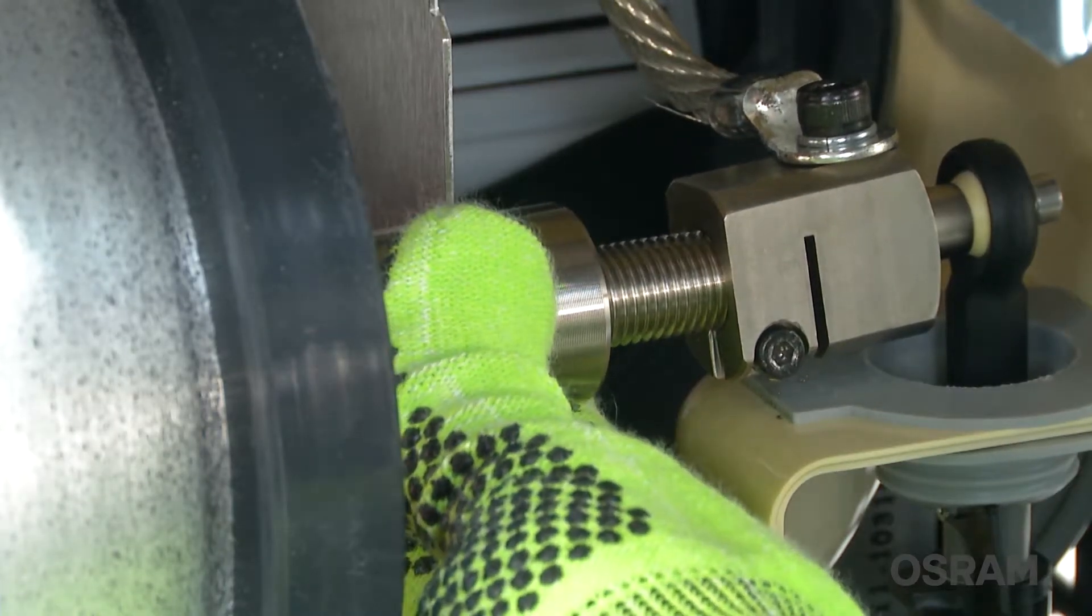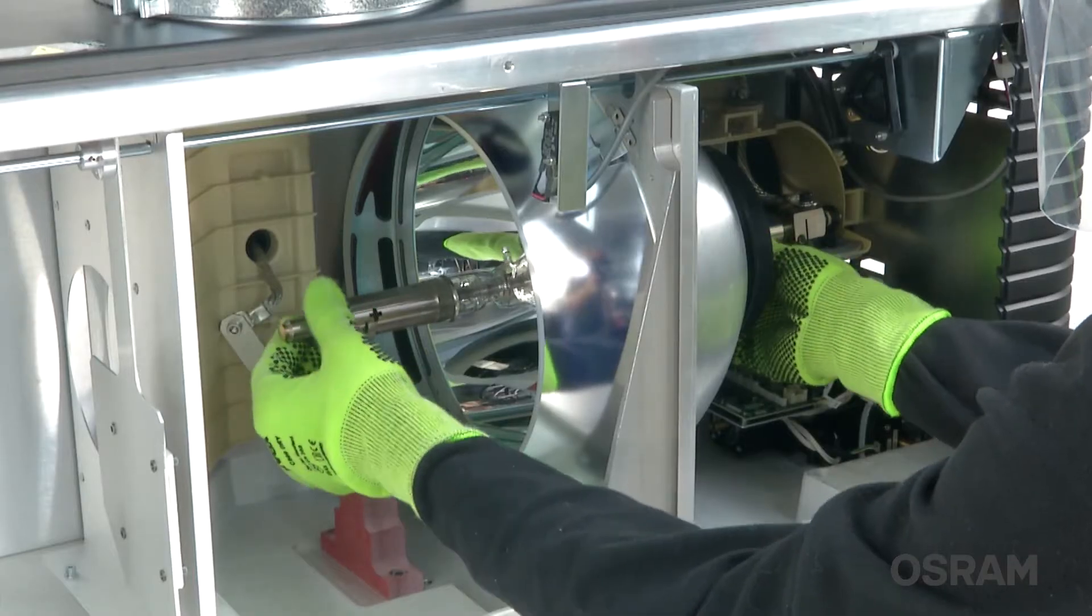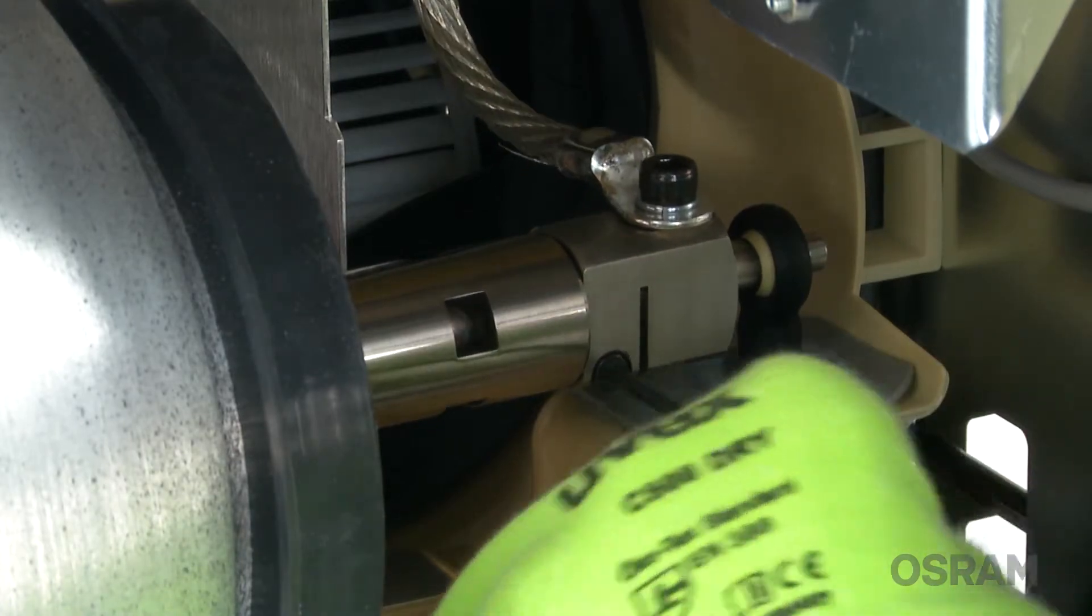Loose screws and connections in the lamp area will increase the resistance in the circuit and cause higher than desired lamp temperatures. Check all lamp connections to make sure they are tight.